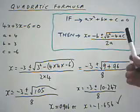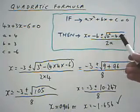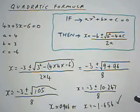There's something I need to mention about this point here, b squared minus 4ac, which is called the discriminant.